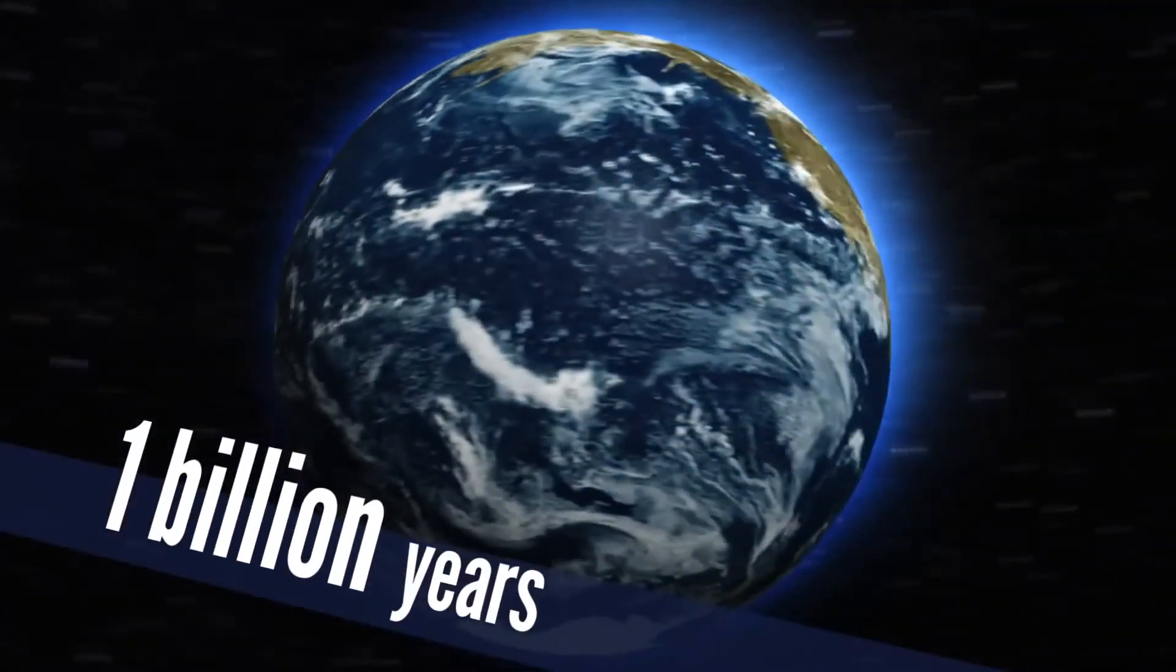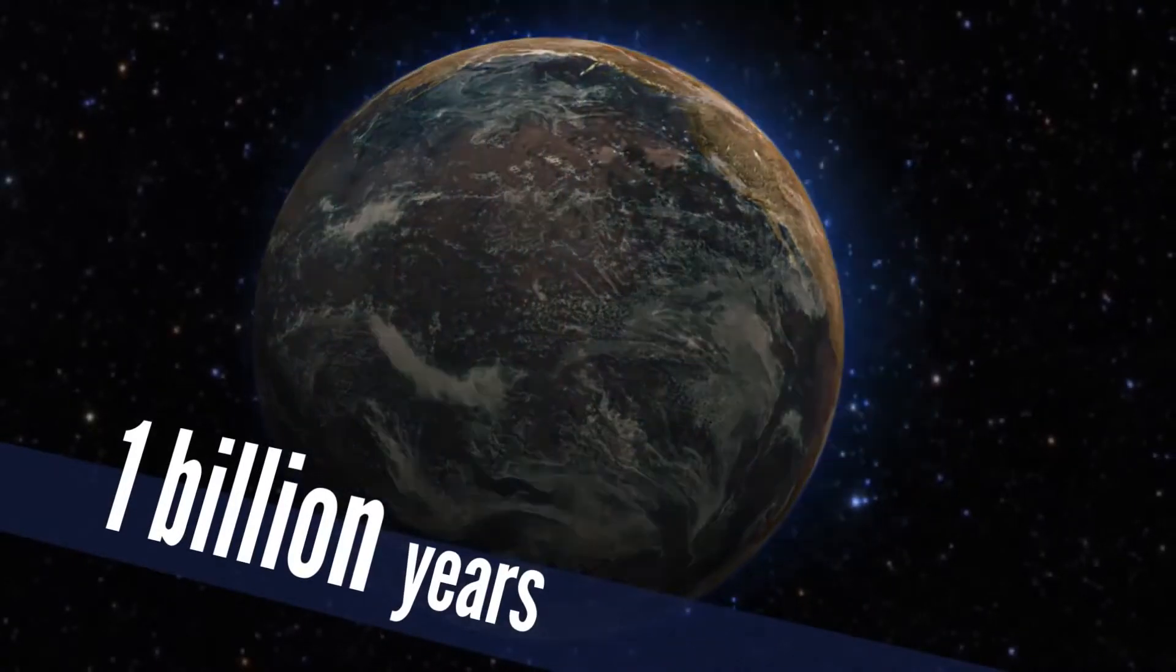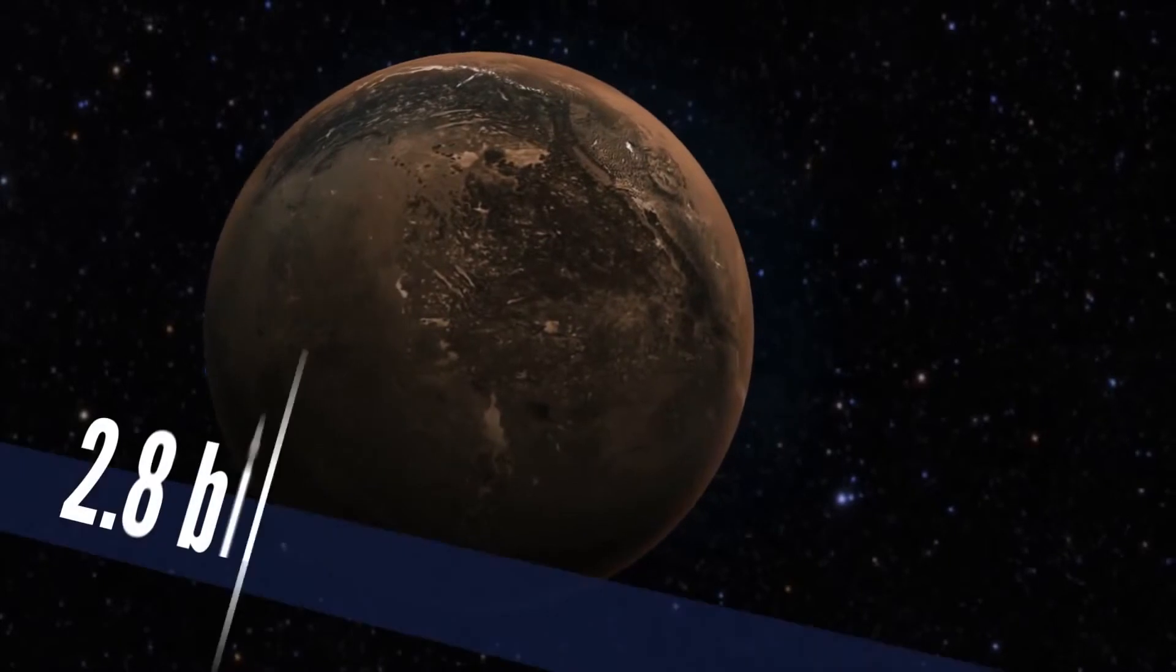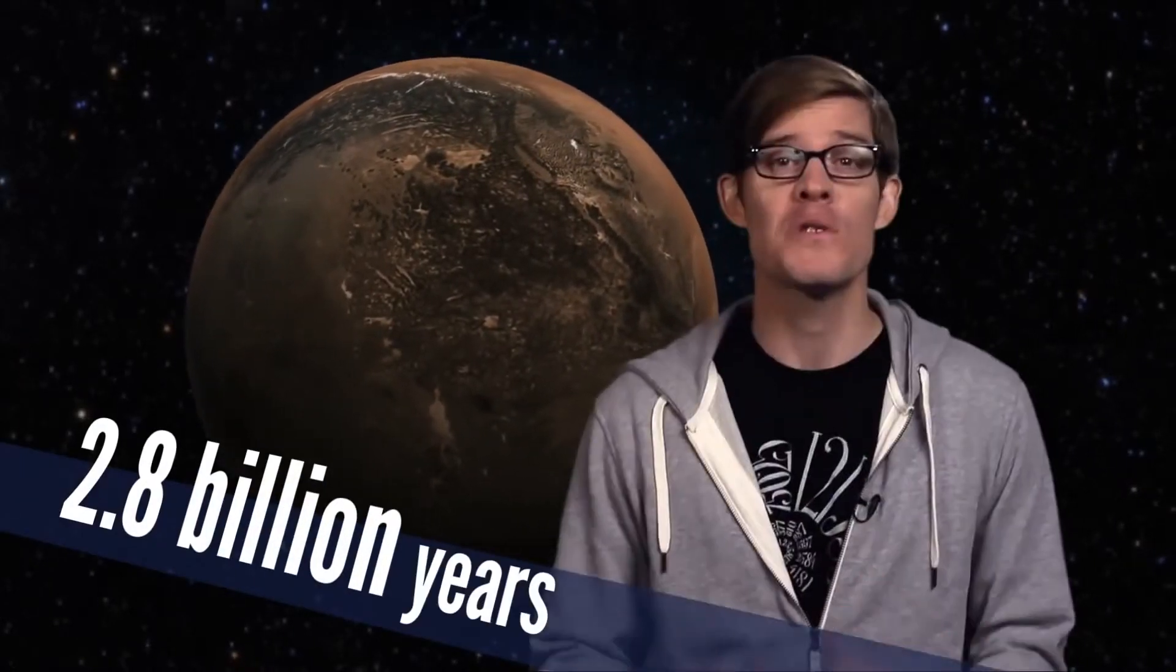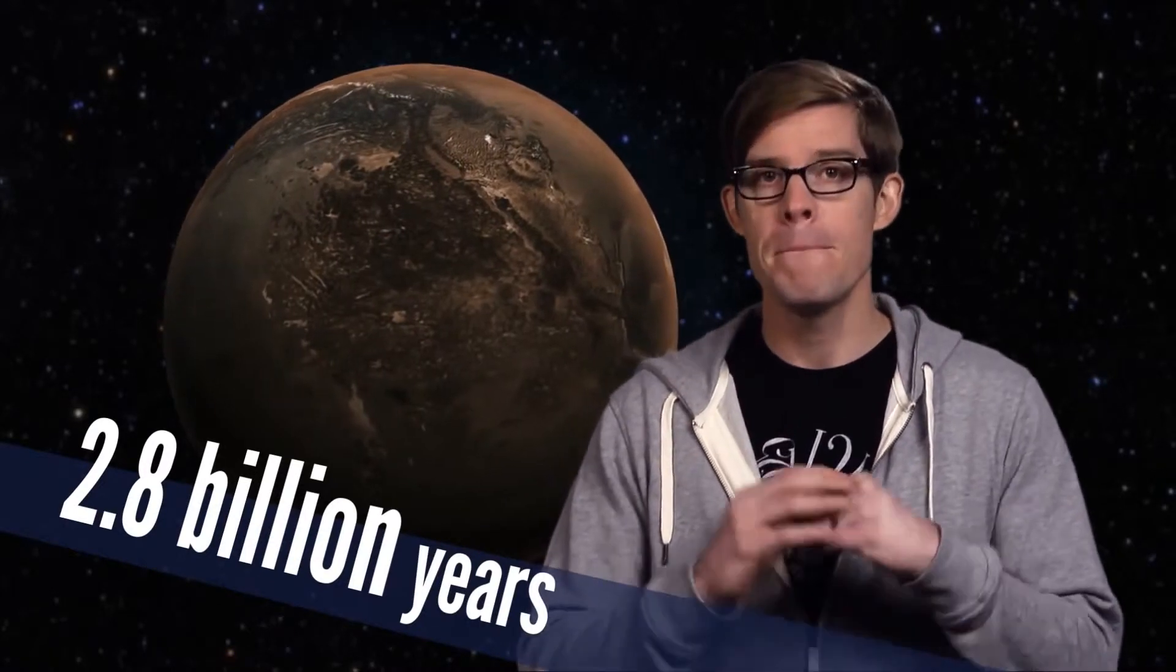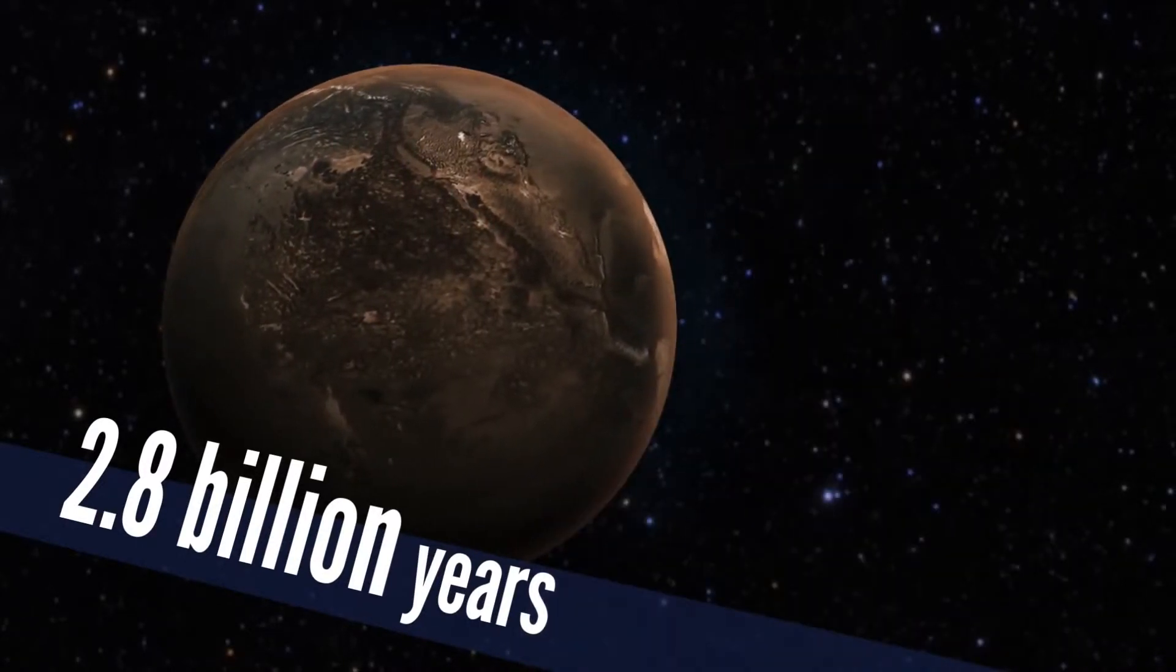A billion years from now, our amped-up sun boils the oceans away, and only bacteria remain. By 2.8 billion years in the future, even those tiny stragglers have run out of time. Life on Earth goes extinct. We had a good 6.5 billion years, didn't we?